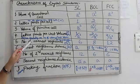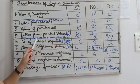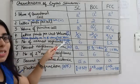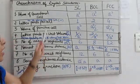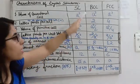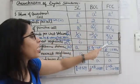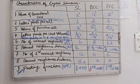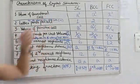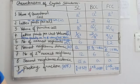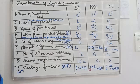The next property is the number of nearest neighbors, also called the coordination number, denoted by n_c. The coordination number represents the number of nearest atoms to a particular atom in a crystal structure. The values are: simple cubic = 6, body centered cubic = 8, face centered cubic = 12.